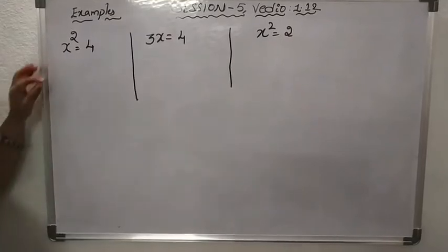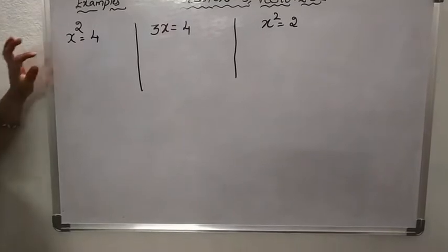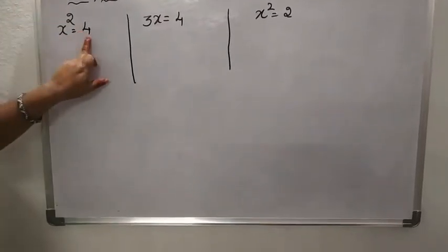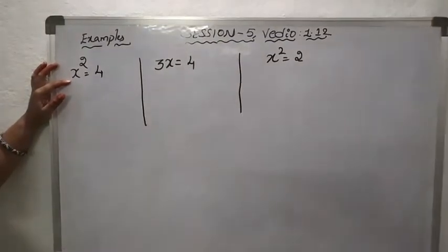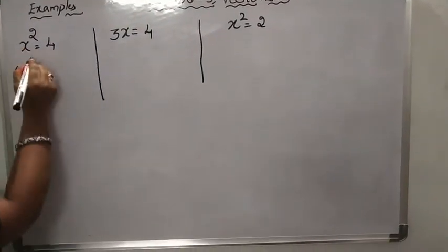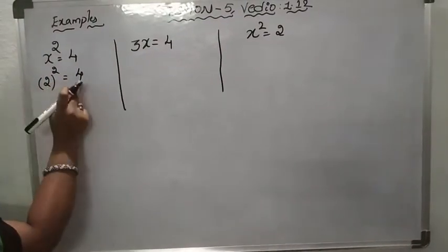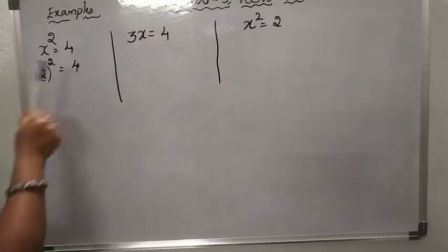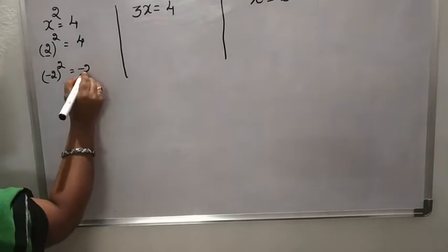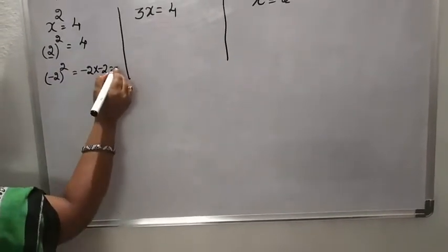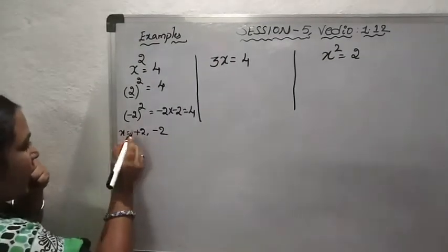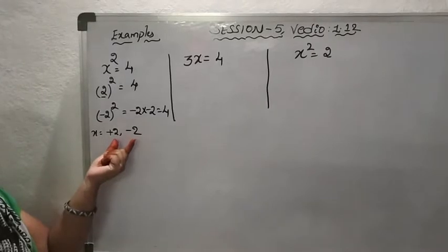Here x squared is equal to 4. We have to find the solution for this algebraic expression by substituting a value for x that gives the RHS value. If we substitute x = 2, then 2 squared equals 4. If we substitute x = -2, then (-2) × (-2) = 4, giving us minus times minus equals plus. So we get two solutions: x = 2 and x = -2. These two are rational numbers and integers.